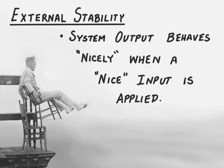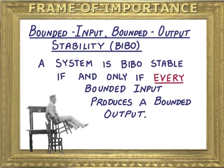Recall external stability meant that a system's output behaved nicely when a nice input was applied. Here is a very important definition which we use for external stability — we'll be discussing it again and again. A system is BIBO stable if, and only if, every bounded input produces a bounded output.